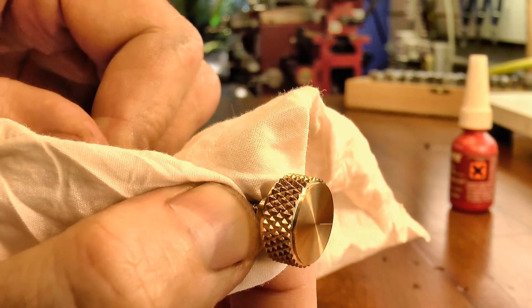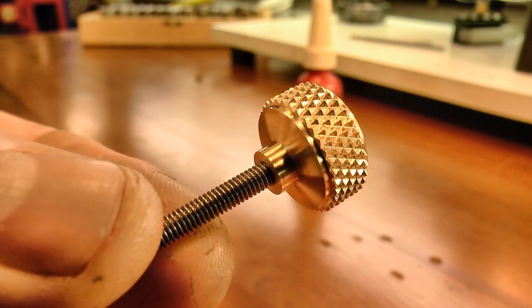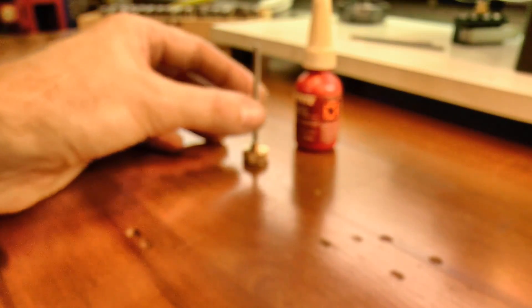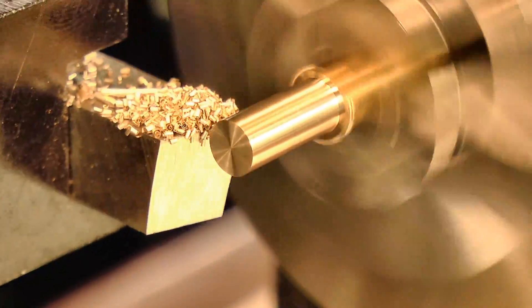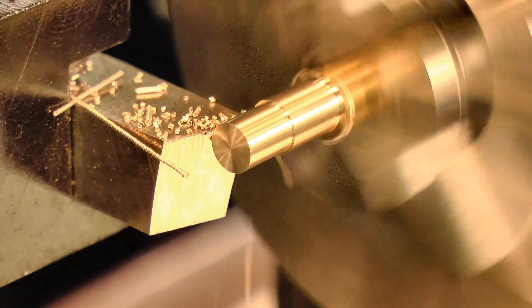And while that was curing, it occurred to me that it might be a good idea to put a little threaded brass cap on the other end of the thumb screw. Since it'll be pushing up against the carrier bolt when in use, and I don't really want that marred over time. So I made that.